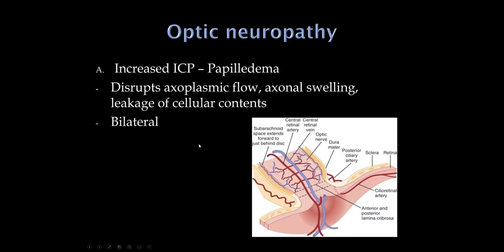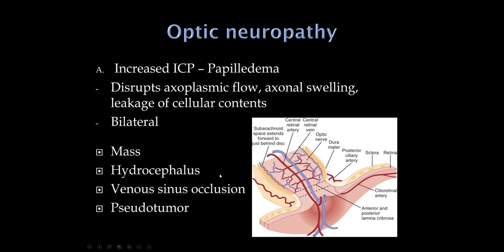In terms of the optic nerve, here's a nice drawing showing the subarachnoid space on either side. If you have increased intracranial pressure from a variety of causes, there is very little place for that pressure to go. One area is transmitted forward to the optic nerve head, disrupting axoplasmic flow and causing axonal swelling — this is papilledema. It is almost always bilateral; seeing papilledema in one eye would be virtually unheard of.